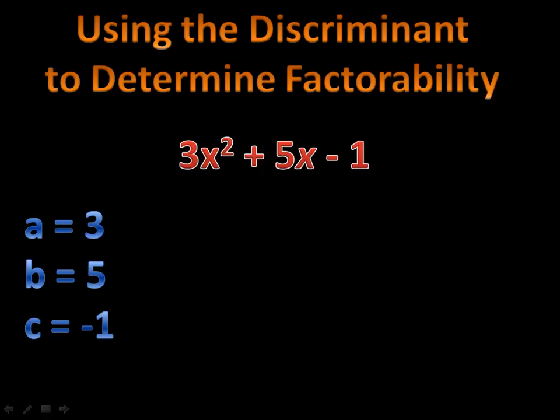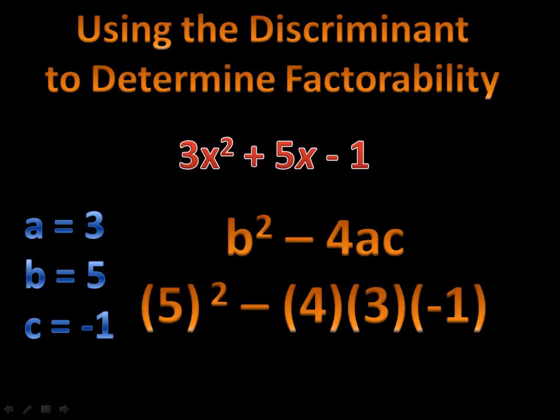a is the number in front of the x squared — 3. b is the number in front of the x — 5. And c is the number off at the end — negative 1. We're going to plug these into the formula b squared minus 4ac. That formula is for the discriminant. We take these values from our a, b, and c, plug them in, and let's see what happens.